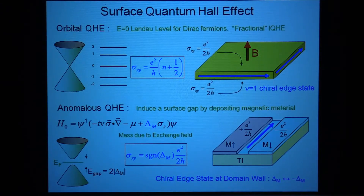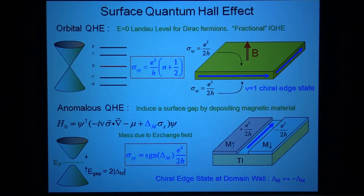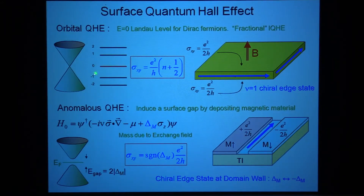What you learn is that the Landau-level spectrum for Dirac electrons has a special state exactly at zero — the zeroth Landau level. The higher Landau levels come out like square root of n. This spectrum has a particle-hole type symmetry, which gives you something interesting: the Hall conductivity changes by e²/h each time the Fermi energy crosses a Landau level — that's the integer quantum Hall effect.